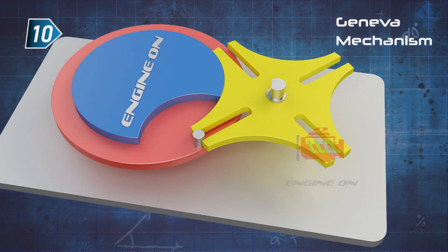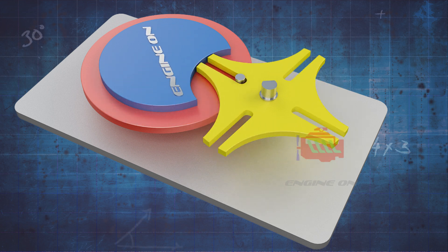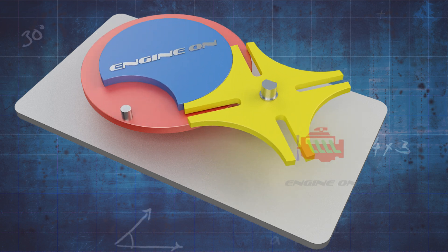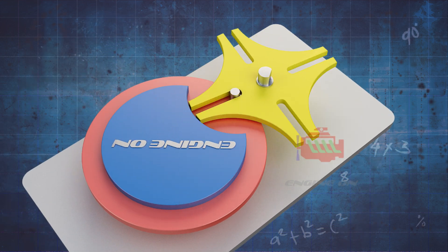A Geneva mechanism is a gear mechanism that converts a continuous rotation into an intermittent rotary motion. It's also known as a Geneva Drive or Maltese Cross. Let's understand how it works.